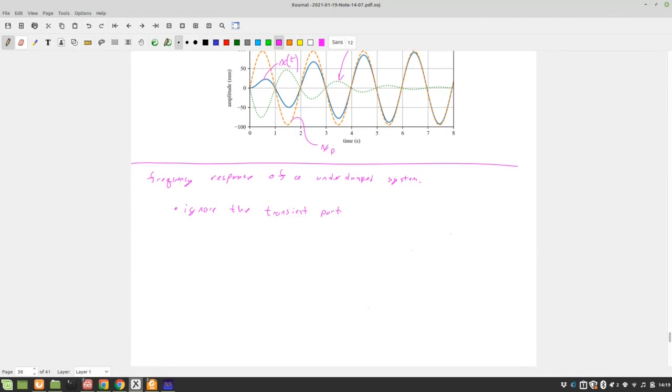And we focus on the steady-state response. So our steady-state response is x_p = X cos(ωt - φ_p).